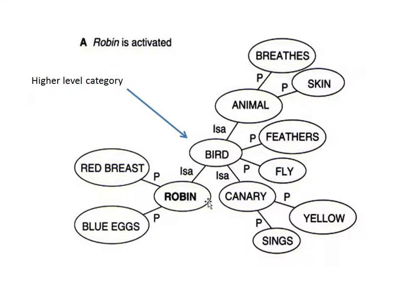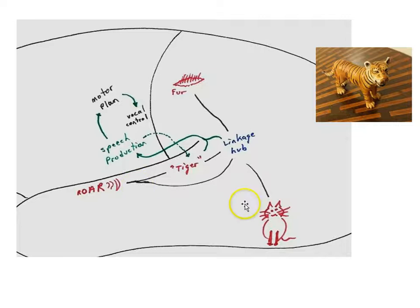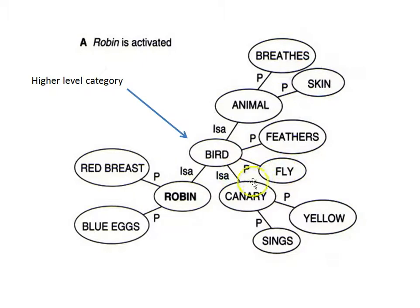Scientists think that in the brain, the same kind of organization is happening — the links in a conceptual map are neural connections: axons, terminals on dendrites, synapses. So the concept of robin is linked in neural networks to the concept of bird, which is linked to animal. The tiger concept we discussed may be linked to other animal concepts as well. As we experience life, we install all kinds of world knowledge in a kind of conceptual map.